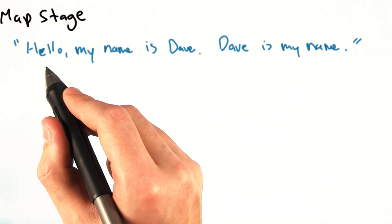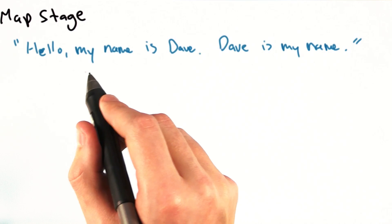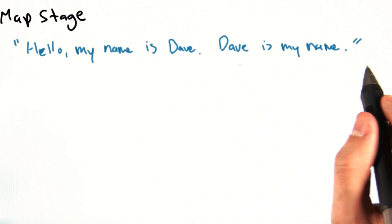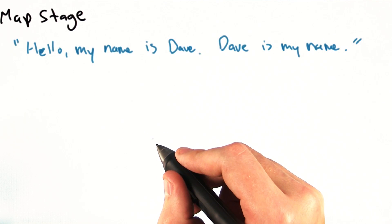Let's say we ran this mapper on the following sentence: 'Hello, my name is Dave. Dave is my name.' The mapper would split the words on the whitespace like so.